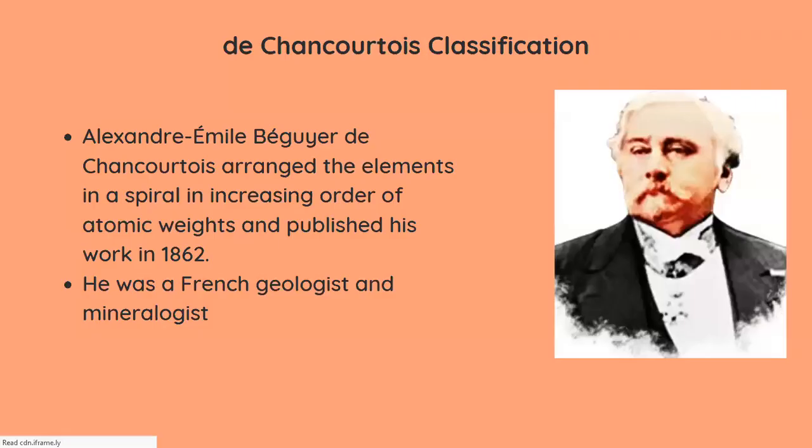The second we'll be learning about is de Chancourtois's classification. Alexandre-Émile Béguyer de Chancourtois arranged the elements in a spiral order and he published his work in the year 1862. He was not a chemist but a geologist and a mineralogist.